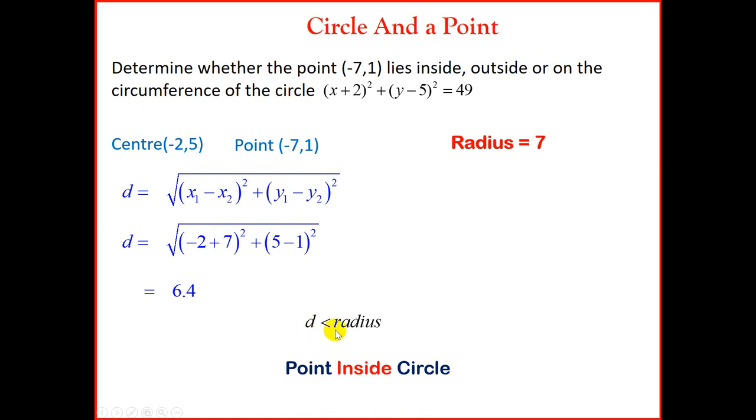Remember, if the distance was equal to the radius, if this was 7 and 7, then we would conclude the point lies on the circumference.